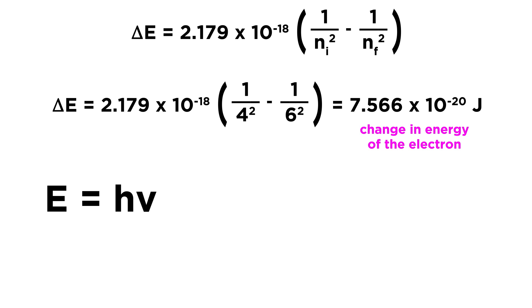Now that we know the energy of the photon, we want wavelength. We know E = hν and c = λν. We want wavelength, so let's manipulate the second equation to read ν = c/λ.